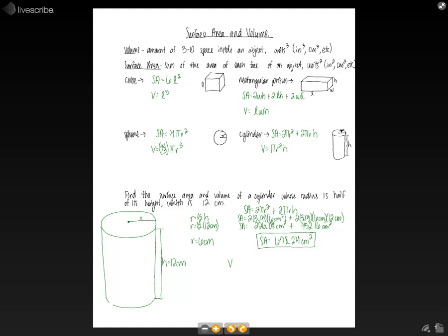And now if we go find the volume, our equation is pi R squared H. So we have 3.14 times 6 centimeters. That value is squared. And then a height of 12 centimeters. So when we work this out, we get a volume of 1,356.48 centimeters cubed.